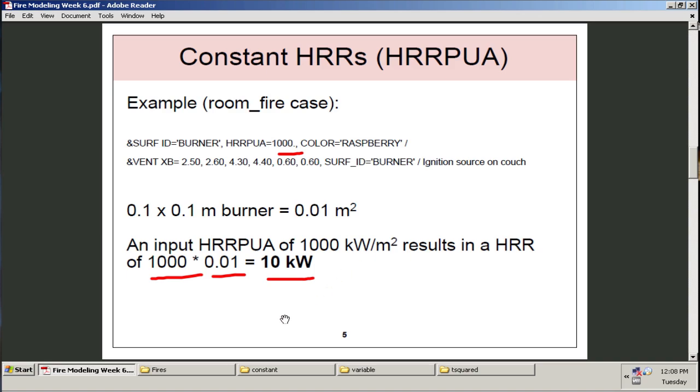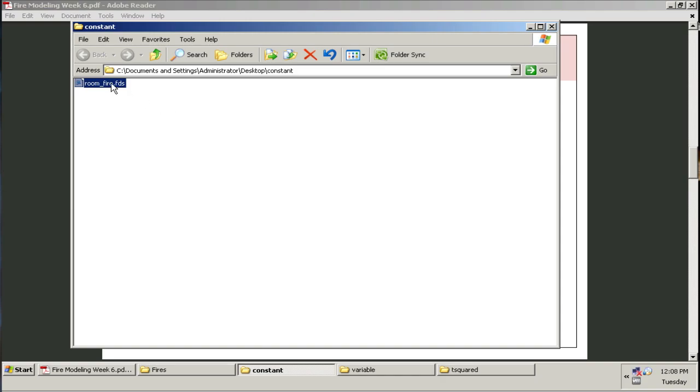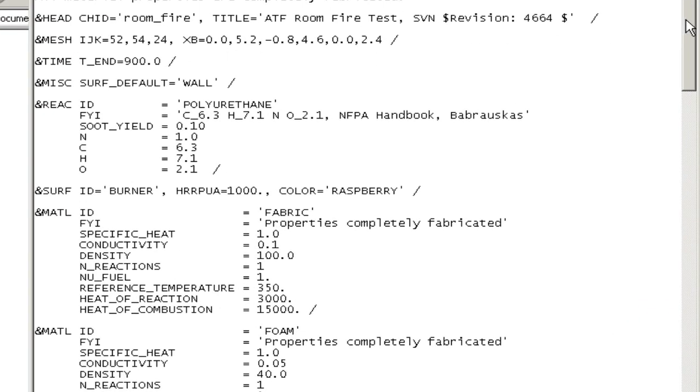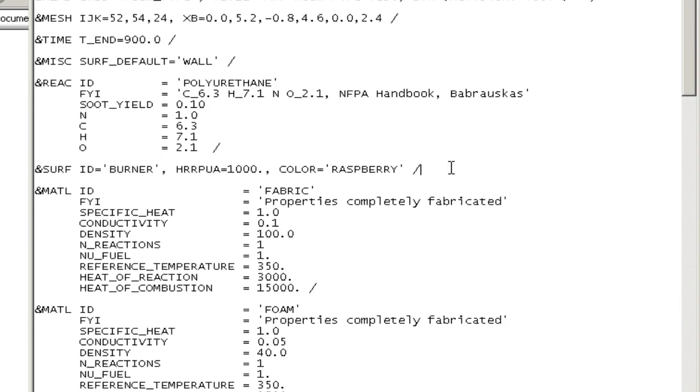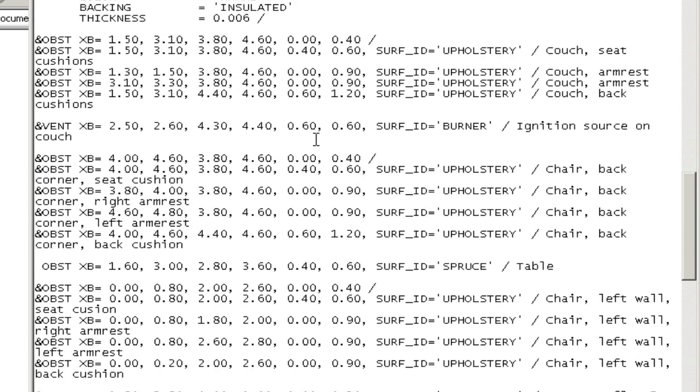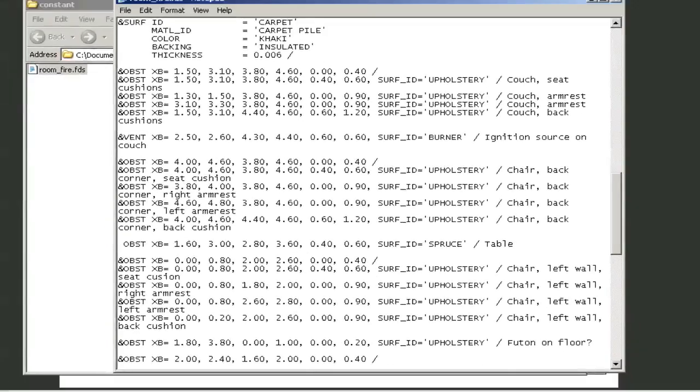In this case, we have 10 kilowatts. I'll go ahead and open that constant folder. If I double click this, I have it set to open in Notepad. If we scroll down, we have the SurfID here. There's that burner line it's talking about. There's the heat release rate per unit area. And if we go down a little bit in the file, we see the vent line here. This is exactly as shown before. It's 0.1 by 0.1 meters. So, the heat release rate coming out of this burner is going to be about 10 kilowatts.